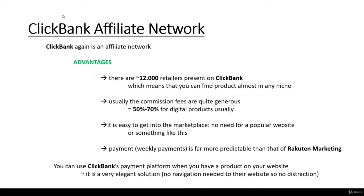Let's talk about the advantages of ClickBank Affiliate Network. The first advantage is that there are lots and lots of products — approximately 12,000 retailers are present on ClickBank, so you can find products in almost any niche. Usually the commission fees are quite generous: you can get as high as 50%, even 70% commission fees for digital products. It is easy to get into the marketplace with no need for a popular website. There are also weekly payments, which are far more predictable than Rakuten Marketing. Additionally, you can use ClickBank's payment platform on your own website, which is a much more elegant solution with no distraction.